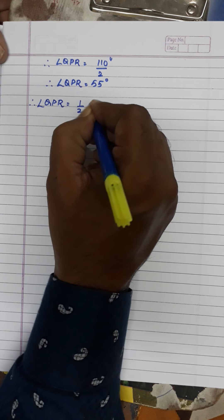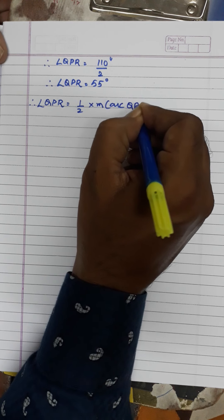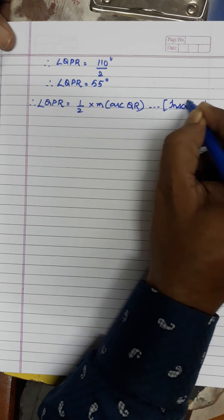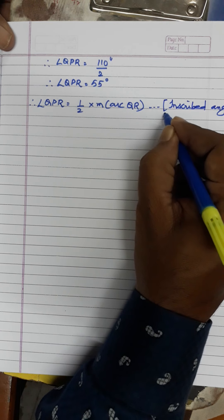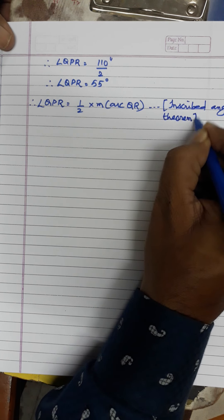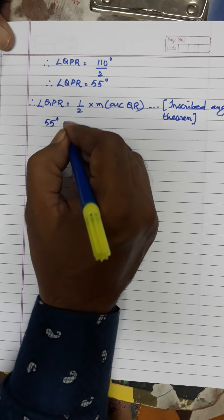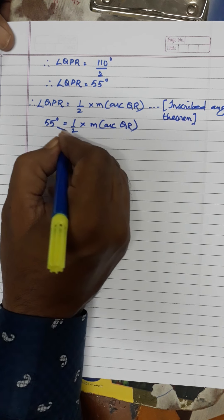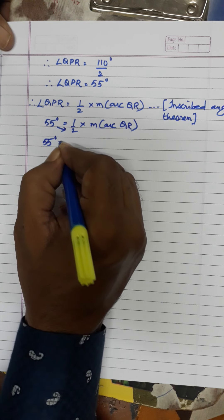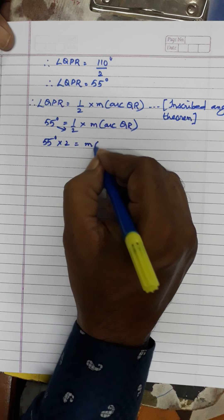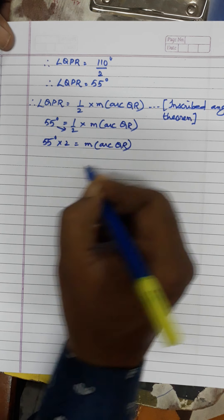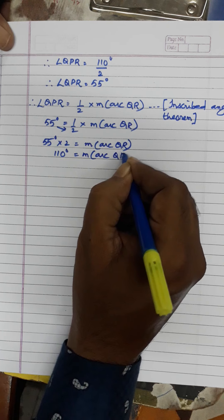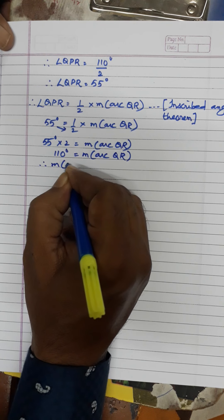Therefore, angle QPR equals one-half of measure of arc QR, by the inscribed angle theorem. We found angle QPR is 55 degrees, so 55 equals one-half times arc QR. Cross multiplying: 55 times 2 equals arc QR, so measure of arc QR equals 110 degrees.